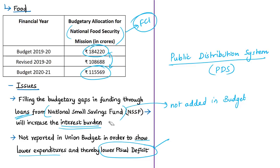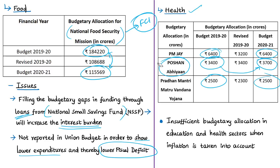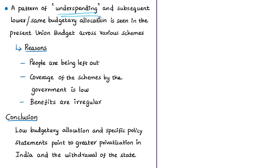The author also discusses low budgetary allocations in education and health. When compared to the previous union budget, allocations are either the same or show only a meager increase in certain schemes. Overall, there is just a Rs. 5,000–6,000 crore increase each in education and health budgets, and when adjusted for inflation, funds become insufficient. The author identifies a pattern of underspending leading to subsequent lower budgetary allocations across the budget.